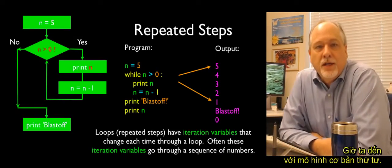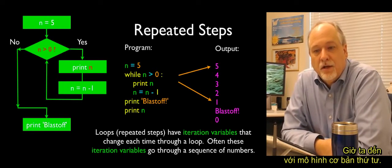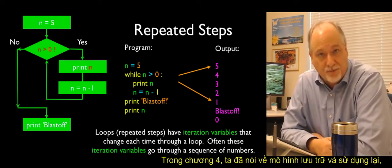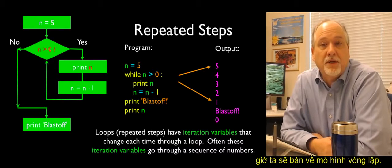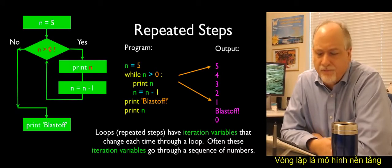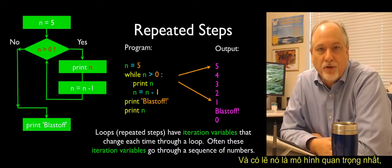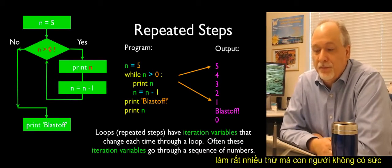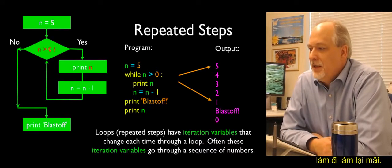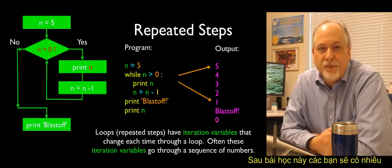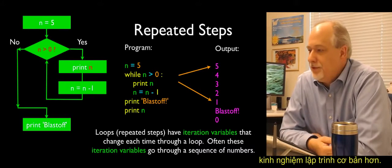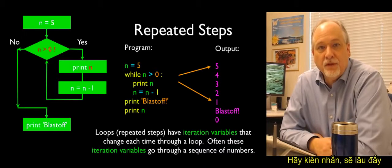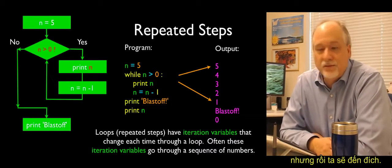So now we're getting to our fourth basic pattern. We've talked about sequential, where steps happen one after another. We've talked about conditional, where steps may or may not happen. In Chapter 4, we talked about the store and retrieve pattern. And now we're going to talk about the looping pattern — the last of our foundational ones, and potentially the most important, because it allows computers to do lots of things that humans might get tired of but computers don't. After this, we'll talk about strings, then files, and start doing some real work.